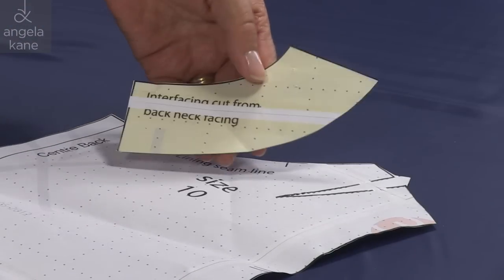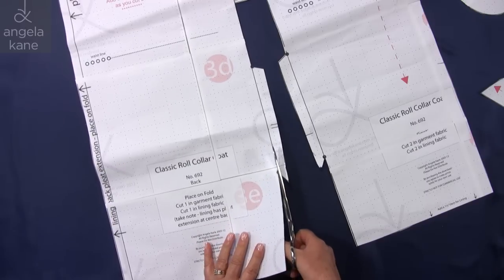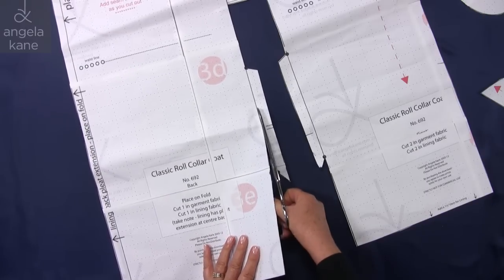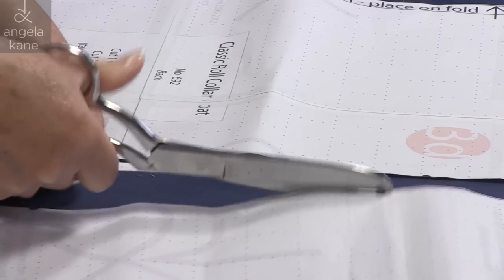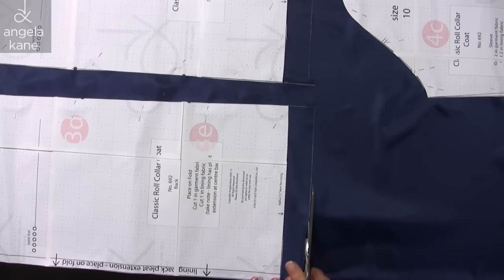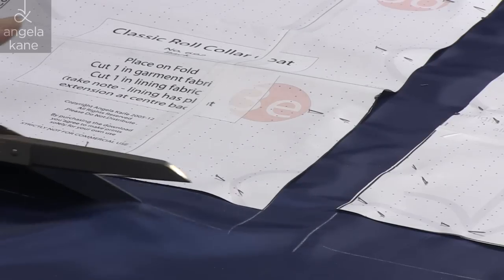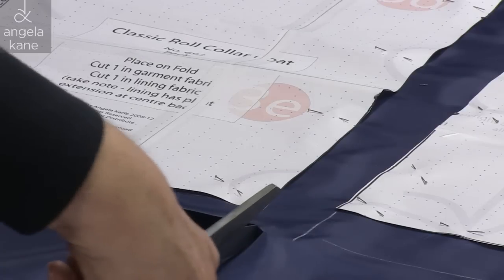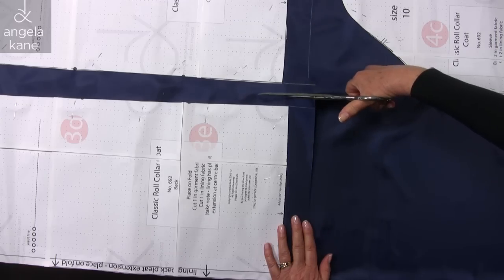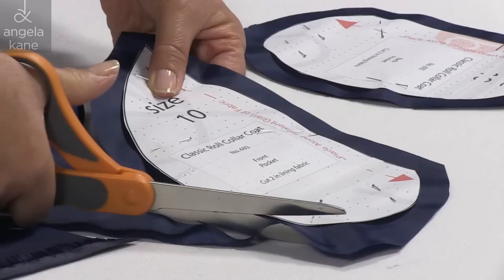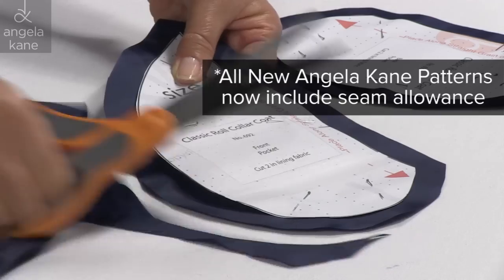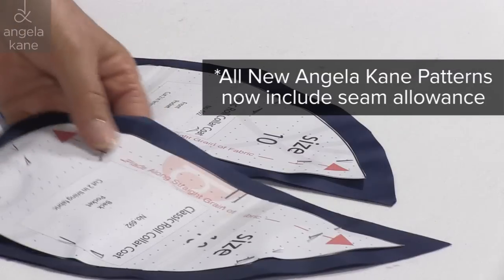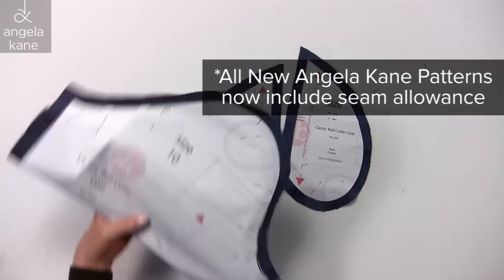We can put the back neck interfacing pattern on one side. Nor do we need the pocket extensions. So the lining is pinned and we can go ahead and cut it out. So that's all our lining pieces.